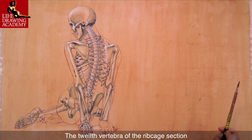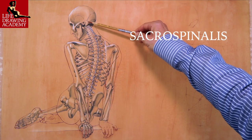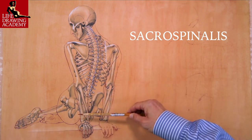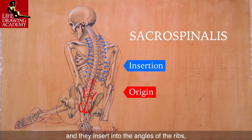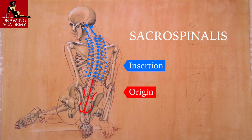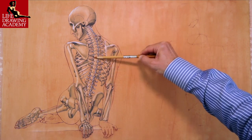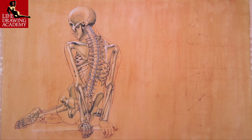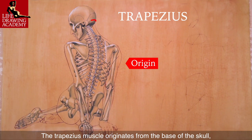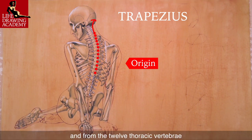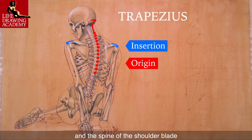The twelfth vertebra of the ribcage section is the last thoracic vertebra. Along the whole spine go the vertical muscles of the back. They originate from the back part of the pelvis as well as the lumbar vertebrae, and insert into the angles of the ribs, the vertebrae, and the base of the skull. I will lightly mark this muscle anatomy in red pencil. The trapezius muscle originates from the base of the skull, along the neck, and from the twelve thoracic vertebrae. It inserts into the lateral third of the collarbone, the acromion, and the spine of the shoulder blade.